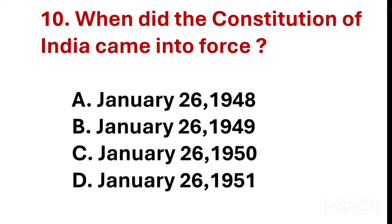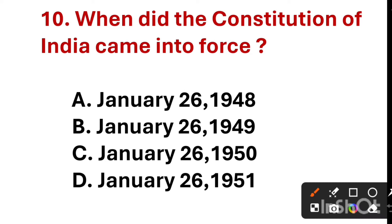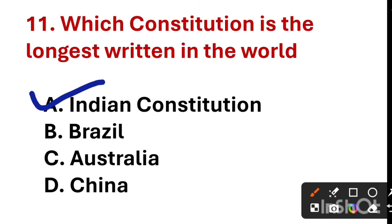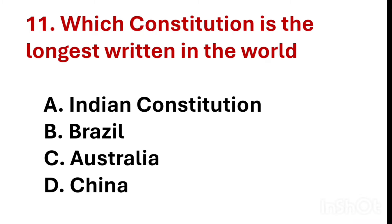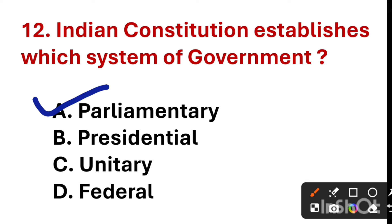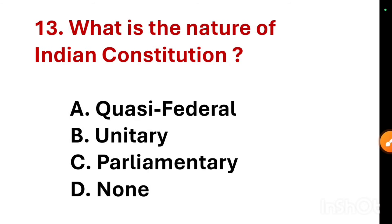When did the Constitution of India come into force? The correct answer is option C — January 26, 1950. Which constitution is the longest written in the world? The correct answer is option A — the Indian Constitution. The Indian Constitution establishes which system of government? The correct answer is option A — parliamentary form of government.